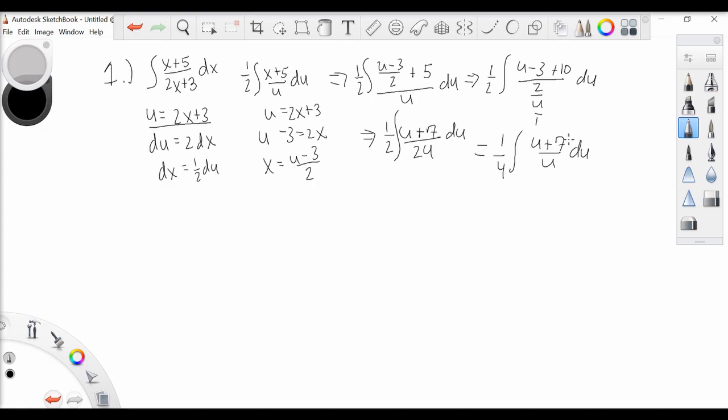And this can be a little bit easier to see if we divide through the numerator by u. So we have one-fourth the integral of u over u is 1 plus 7u to the minus 1 du.